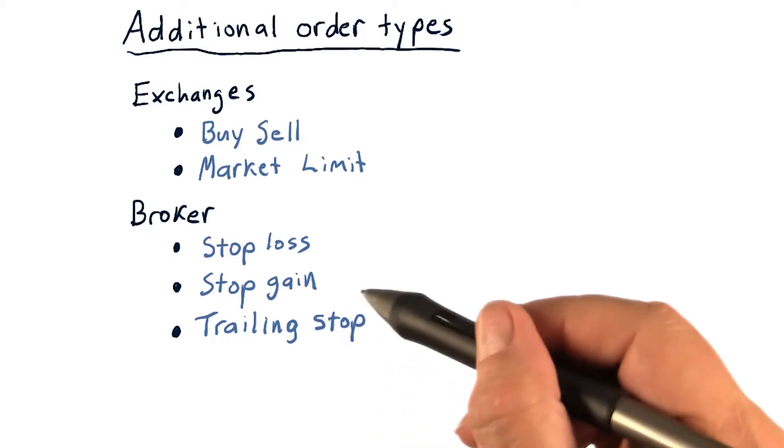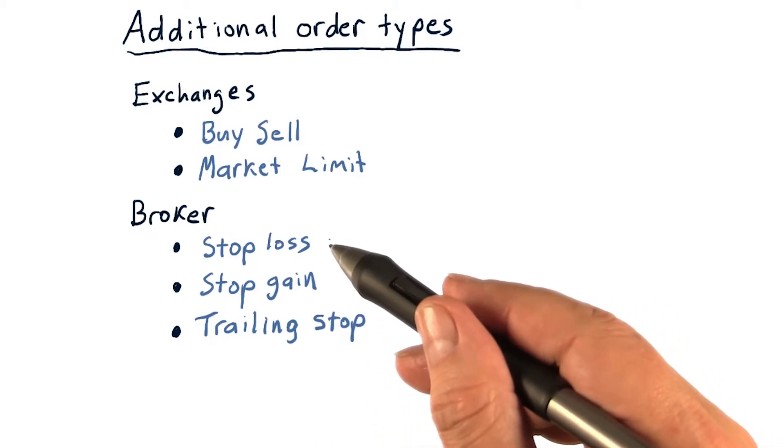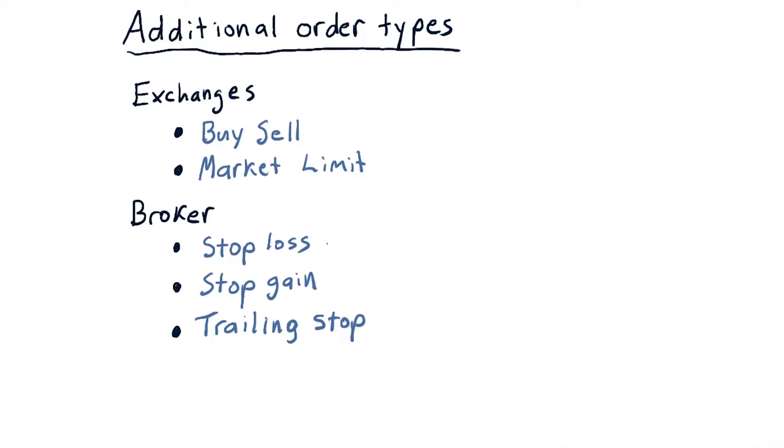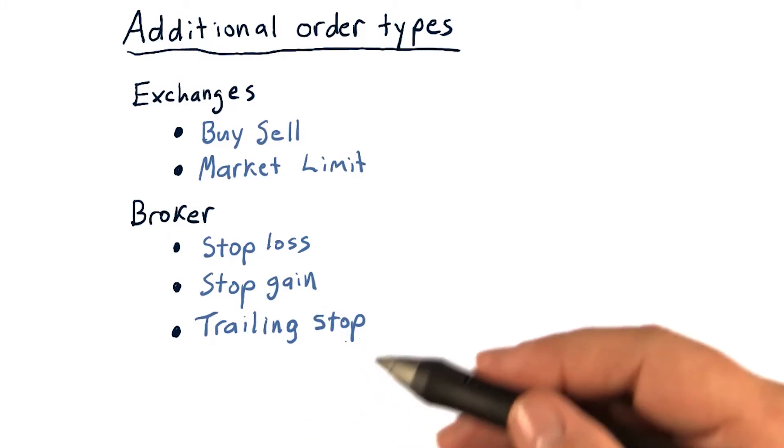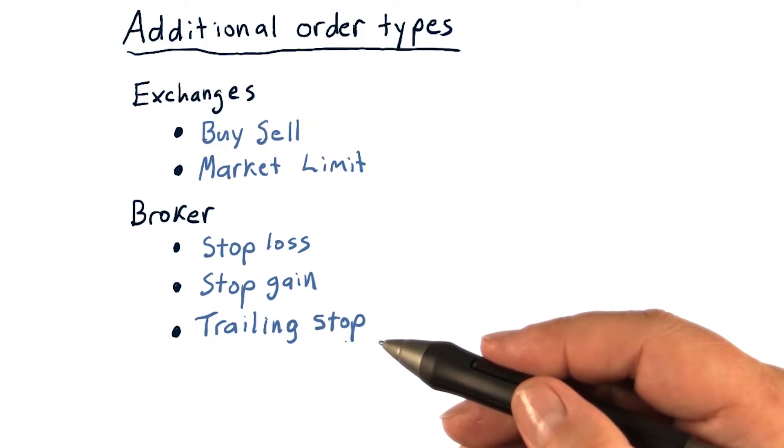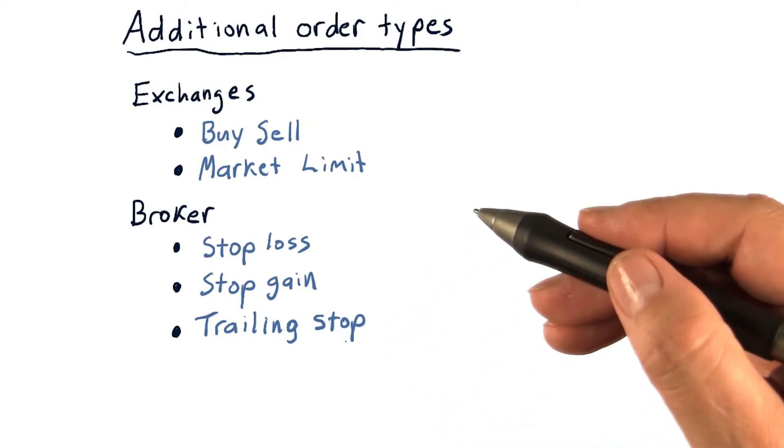Trailing stop is a combination of stop loss, but also an automatically changing value for when that criteria is met. So for instance, you might have this trailing stop remain, say, 10 cents behind the price. So as the price goes up, the value at which you would want to sell the stock goes up along with the price.